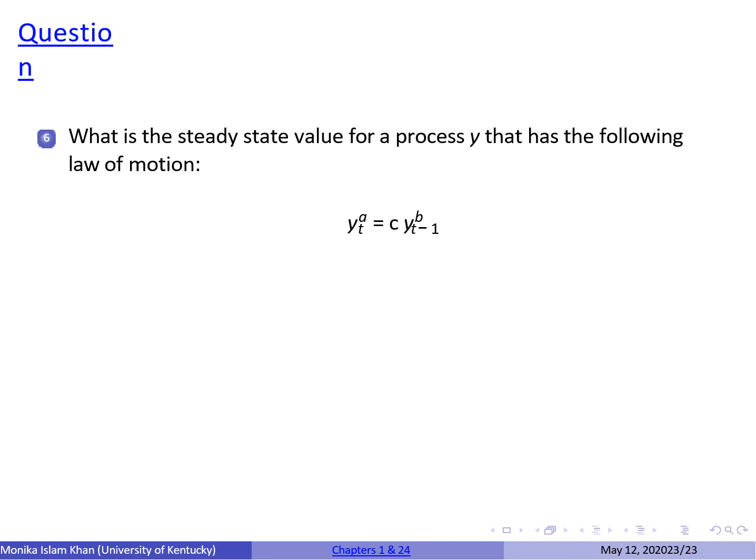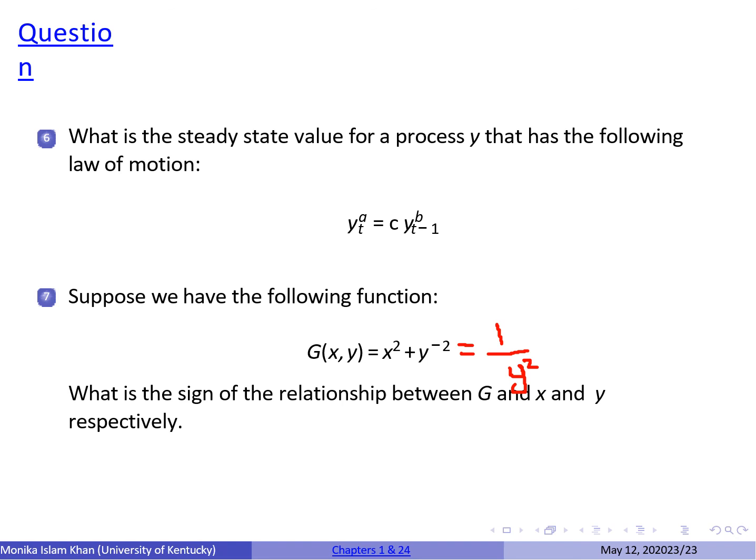This next question is about finding the steady-state value for a process. The equation is y_t^a = c · y_{t-1}^b. Remember how we calculate a steady state — set y_t equal to y_{t-1} equal to y, and then solve for y to find the steady state.